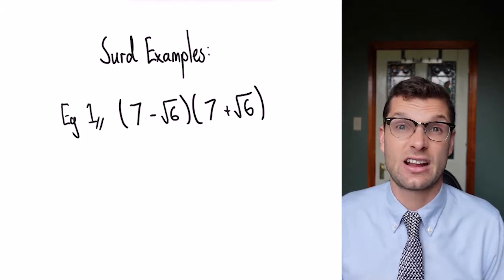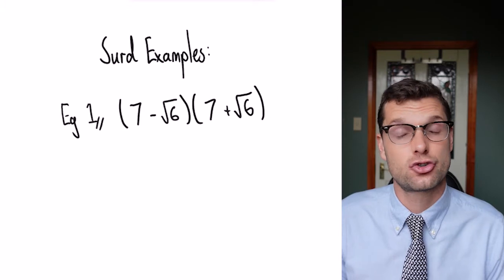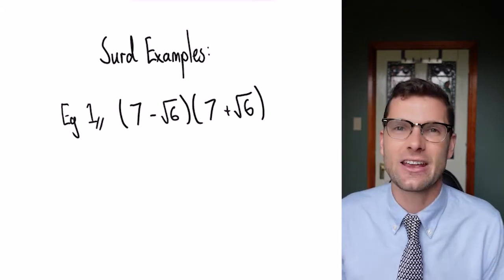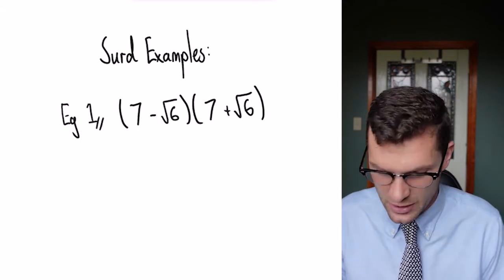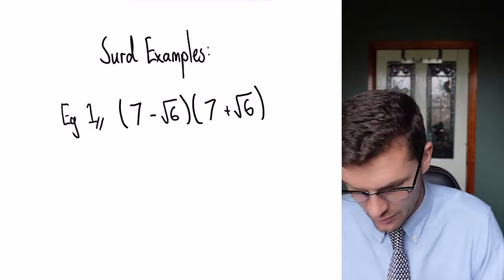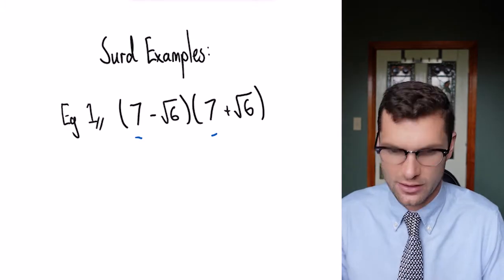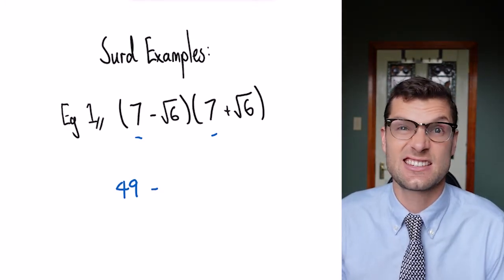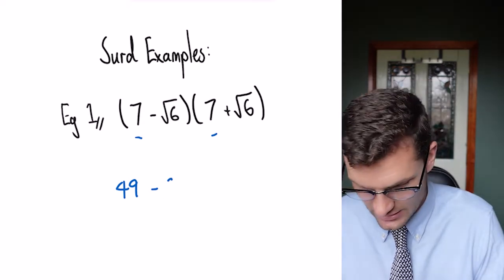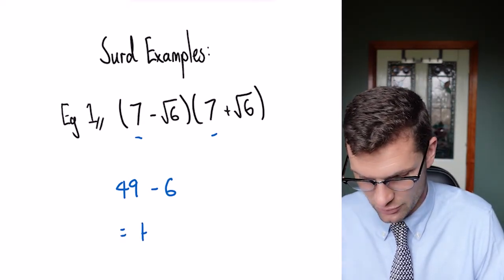We're going to have a look at a couple more examples, just skipping straight to that formula step. For this one, I can see exactly the same terms with a different sign in the middle. So my answer is going to be 7² which is 49, minus √6² which is just 6. So my final answer is 43.